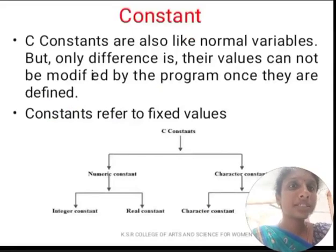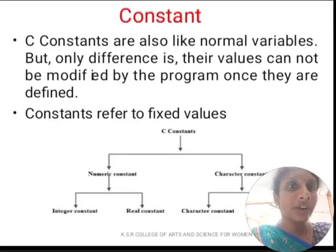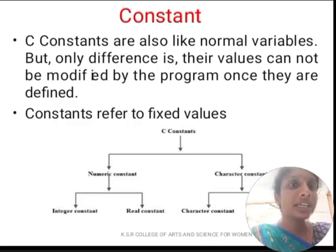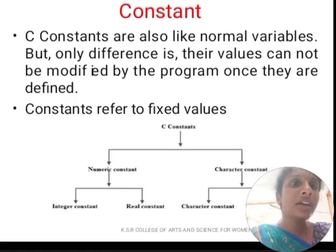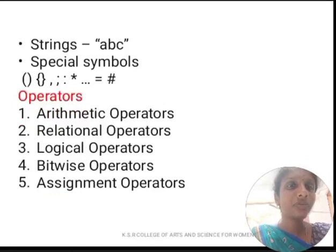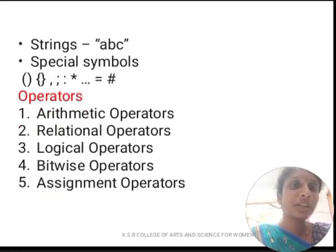Next, we are going to see about constants. Constants are like normal variables, but the difference is that their values cannot be modified by the program once they are defined — constants refer to fixed values. Constants are divided into two types: numeric constant and character constant. Numeric constants are divided into integer constant and real constant. Character constants are divided into character constant and string constant. Strings are specified by double quotes. Special characters include parentheses, curly braces, and punctuation marks like asterisk and number symbols.